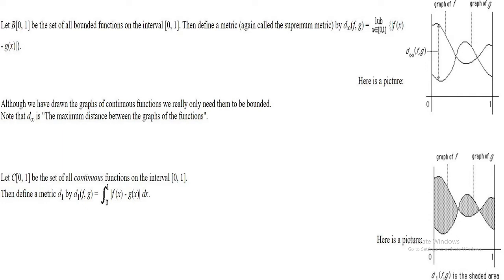We have defined the metric concept, but for continuous functions and bounded functions we also define a metric. Take the collection of all bounded functions on the interval [0,1]. We define a metric d∞(f, g) — the supremum metric — as the least upper bound of |f(x) minus g(x)| where x belongs to the closed interval [0,1]. This collection of bounded functions with this metric satisfies all requirements, and so this is a supremum metric. Here is a graph of f and a graph of g, and the distance between f and g according to this metric is shown.